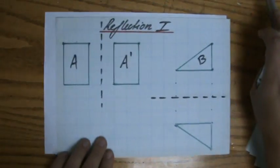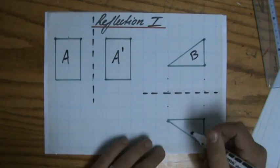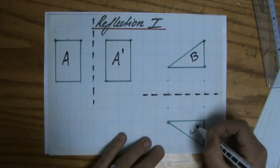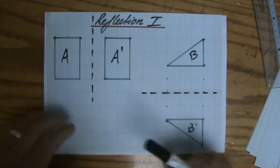The rectangle actually also flipped, but you don't really see that, do you? But now clearly the triangle, my image B', has been flipped over that mirror line.